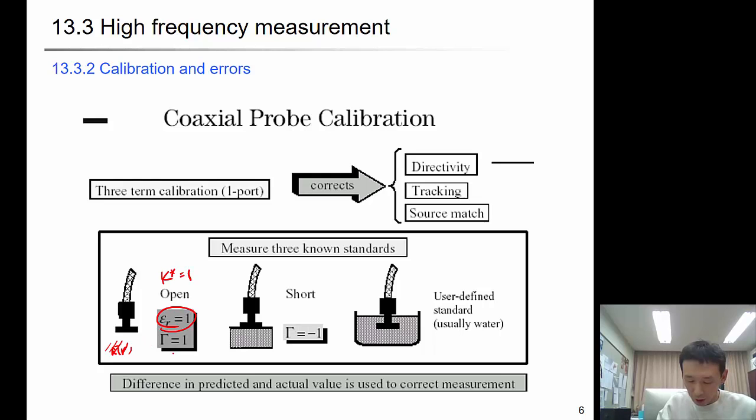If you have a metallic material, like a copper surface or aluminum surface that's in contact with the sensor, then the reflection coefficient will be minus 1. Using that also, you can calibrate this short circuit condition. Because we know the complex permittivity of water at a certain frequency, we can use water as a standard solution at a certain standard temperature. Difference in the predicted and actual value is used to correct the measurement.